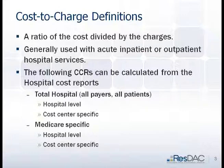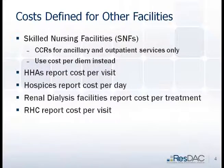You can also pull out Medicare-specific cost-to-charge ratios, either at the hospital level or at the cost center level. For other types of facilities, they don't break out costs and charges in the same way as the hospital cost reports. For skilled nursing facilities, they break out ancillary and outpatient services only; otherwise it would be calculated as a cost per diem. Home health reports cost per visit, hospices report cost per day, renal dialysis reports cost per treatment, and rural health clinics report cost per visit.